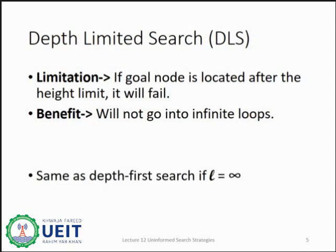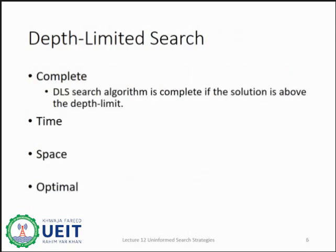If we set the limit to infinity, then depth limited search will start working as depth first search, meaning L equal to infinity is the same as having no limit. If the solution exists after the selected depth limit, the algorithm will never find it and thus will be incomplete. It will only find a solution if it exists before the height limit. Previously we considered branching factor raised to the power of maximum depth, but in depth limited search, the maximum depth is replaced by the selected height limit. Depth limited search is not optimal even if the limit is kept greater than the depth of the state space. Thus DLS is not optimal.